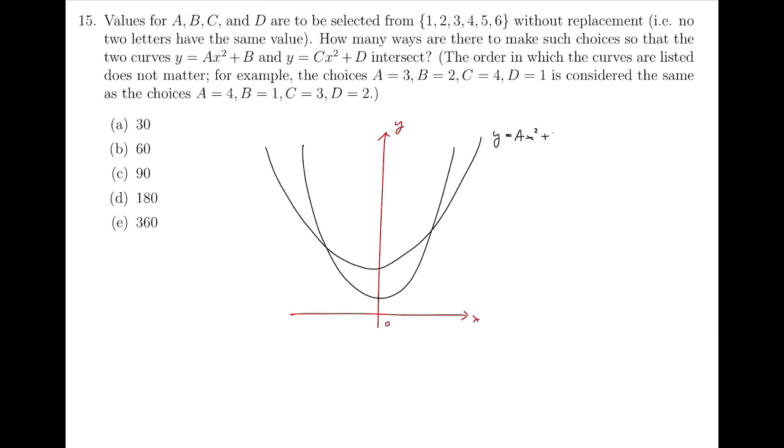If this is AX squared plus B, and the one in the middle, the narrow one, is CX squared plus D, then we can quickly see that C must be larger than A, while the y-intercepts B and D must have this relation, B must be the greater one.